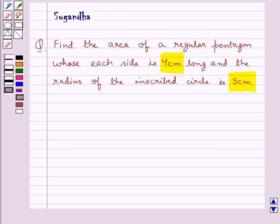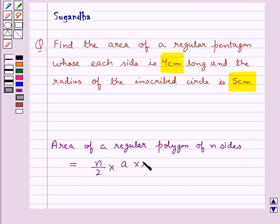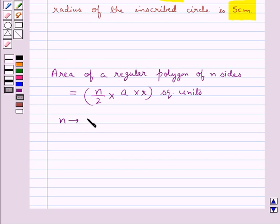Before proceeding with the solution, let's recall the formula for the area of a regular polygon of n sides. This is equal to n upon 2 into a into r square units, where n is the number of sides of the regular polygon.